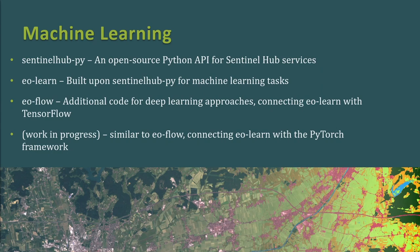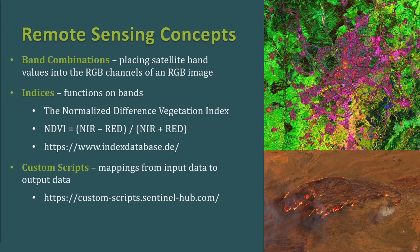For machine learning options: SentinelHub-Py is an open-source Python API for Sentinel Hub services. Built upon this is EOLearn, mostly designed to facilitate machine learning tasks. EOFlow is additional code for deep learning approaches, connecting EOLearn with TensorFlow. There is also a work-in-progress unnamed library similar to EOFlow but connecting EOLearn with the PyTorch framework.